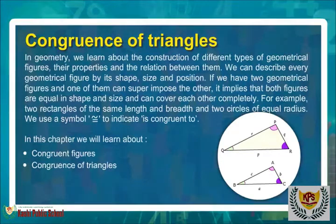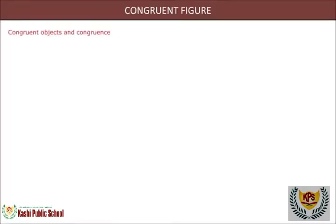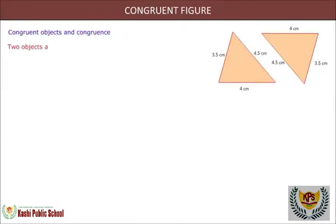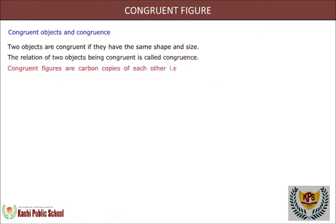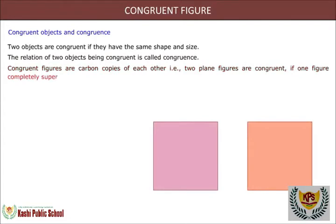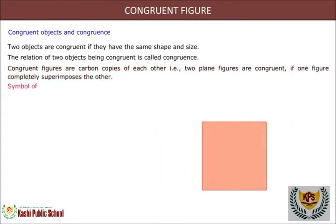Congruent objects and congruence: Two objects are congruent if they have the same shape and size. The relation of two objects being congruent is called congruence. Congruent figures are carbon copies of each other. That is, two plane figures are congruent if one figure completely superimposes the other. The symbol of congruence is ≅ and it is read as 'is congruent to'.